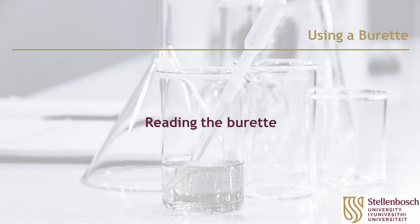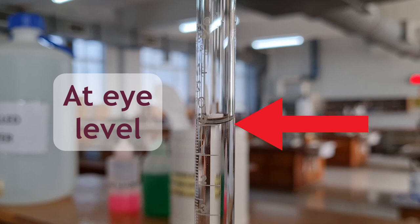Read the burette with your eye on the same level as the meniscus. It may also help you to see the meniscus more clearly if you hold a piece of white paper that has a black streak on it behind the burette. You can use a marker pen to draw this.